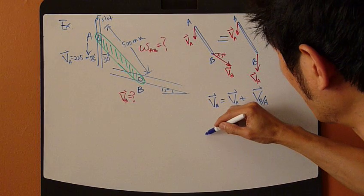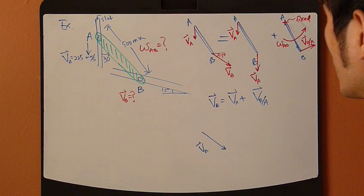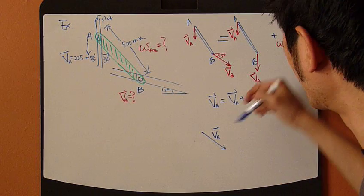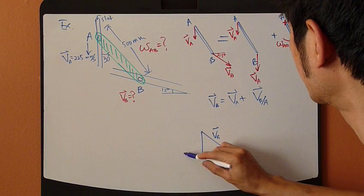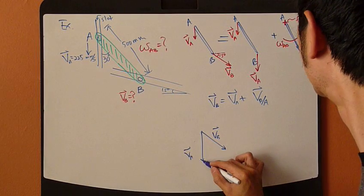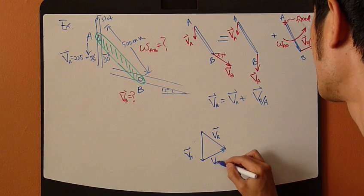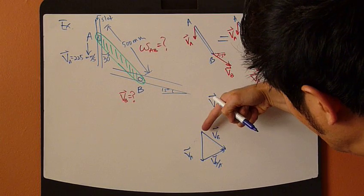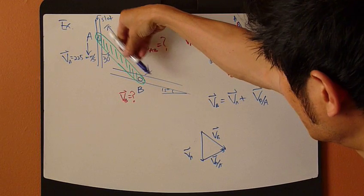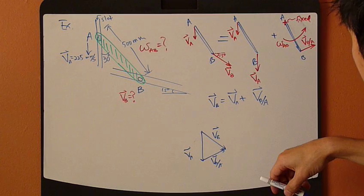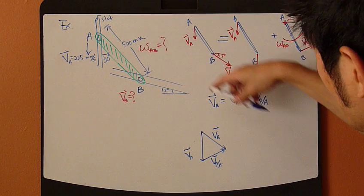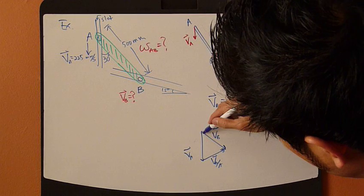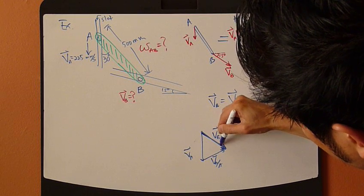I'm going to use that right now. So draw VB equals, I'm going to draw that here, VB equals VA, coming straight down, plus VB/A. Now, next, figure out the angles. Now, VB right here, pointing this way. Actually, now, VB actually is going this way along this slot right here. So I should actually draw it, it gets shallower.